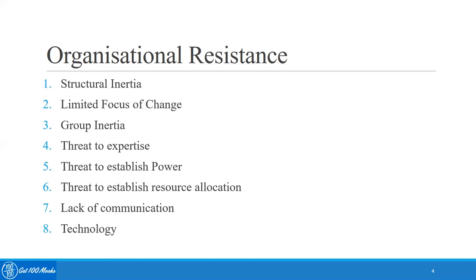Organizations have built-in mechanisms to produce stability. For instance, training and orientation programs reinforce specific role requirement skills. Formalization provides job descriptions, rules, policies, procedures for employees to follow. Once the routine has been established, organizations are very reluctant to adopt new changes.